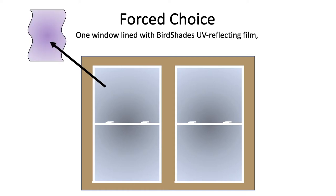In order to test this question, we released birds into an outdoor flight tunnel where they approached a building structure containing two windows. Our first treatment condition presented birds with a forced choice, in which one window is lined with BirdShades ultraviolet reflecting film, and the other is lined with control film, similar in all spectral properties except for the reflection of UV light. We equally assigned each film type to both the left window and the right window to avoid any side bias that could influence our results.